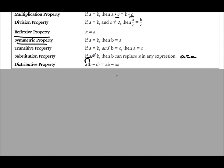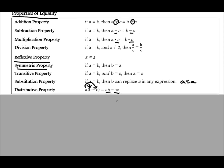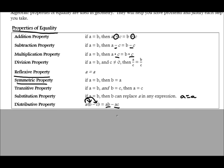The distributive property is when you take one term and multiply it to two or more terms inside a set of parentheses. So a would be multiplied to b to give us ab, and a would be multiplied to c to give us ac. These properties you've learned in the past in algebra, and they're going to help us in geometry to learn how to do a formal proof.